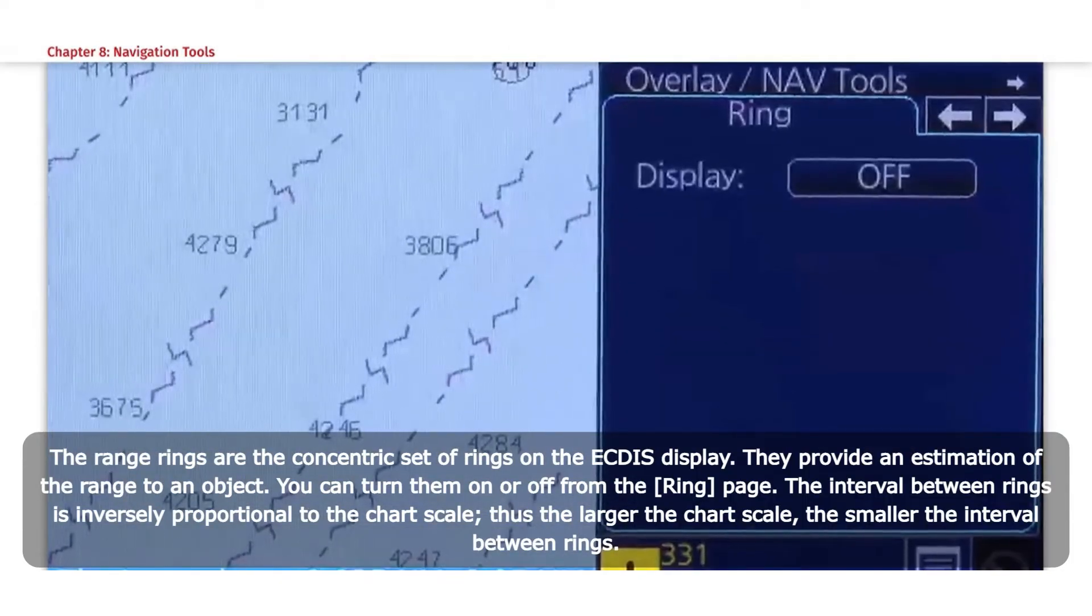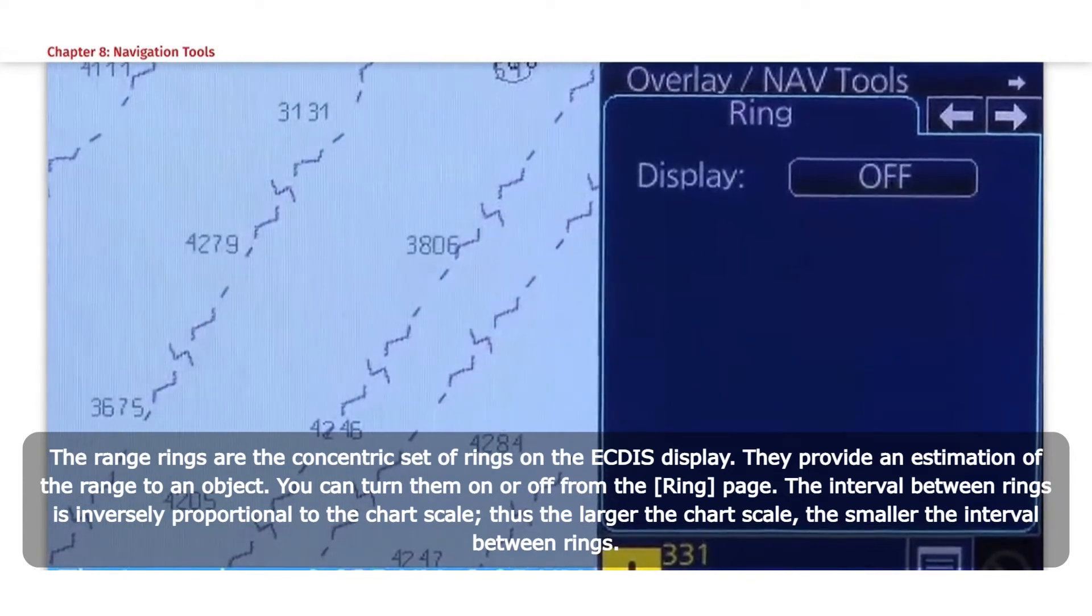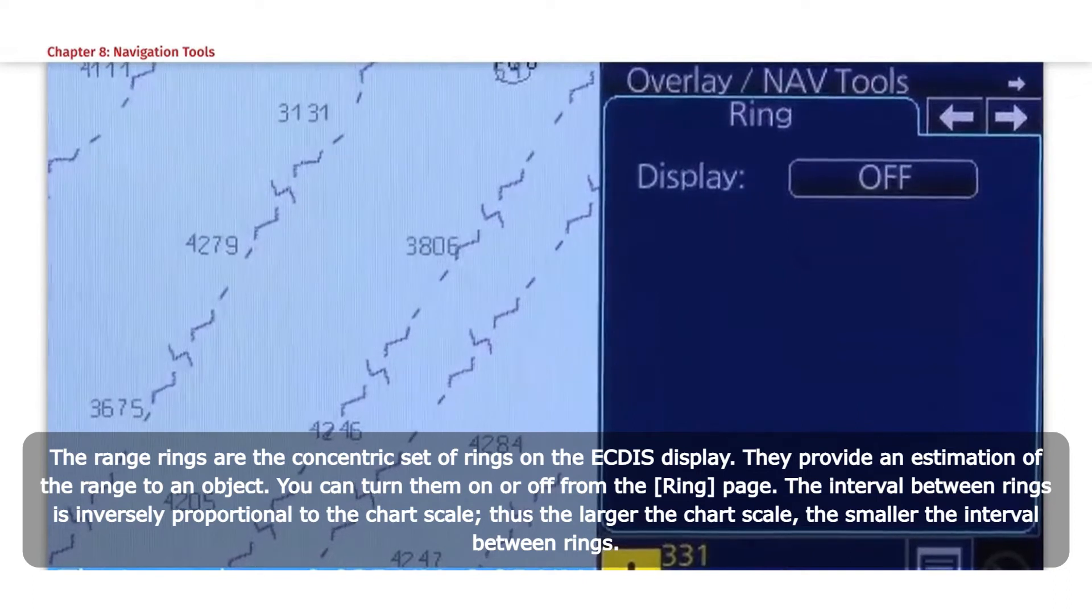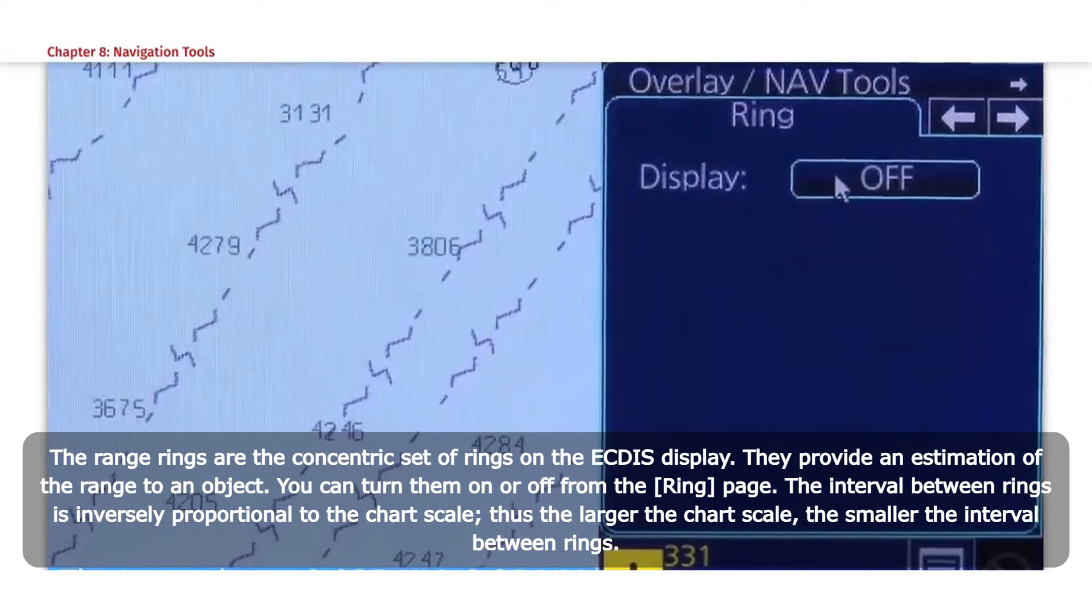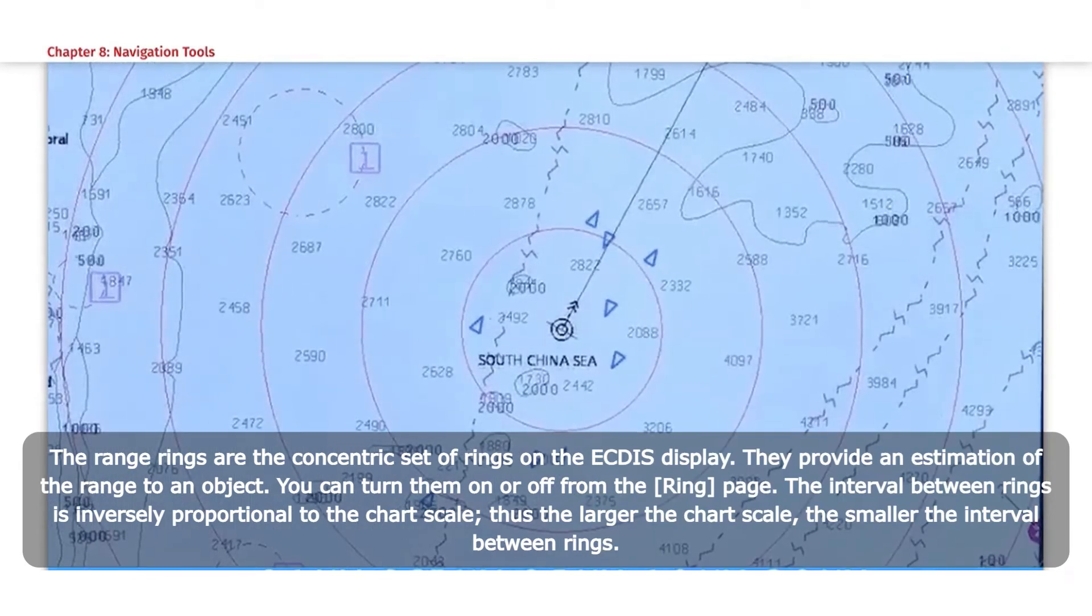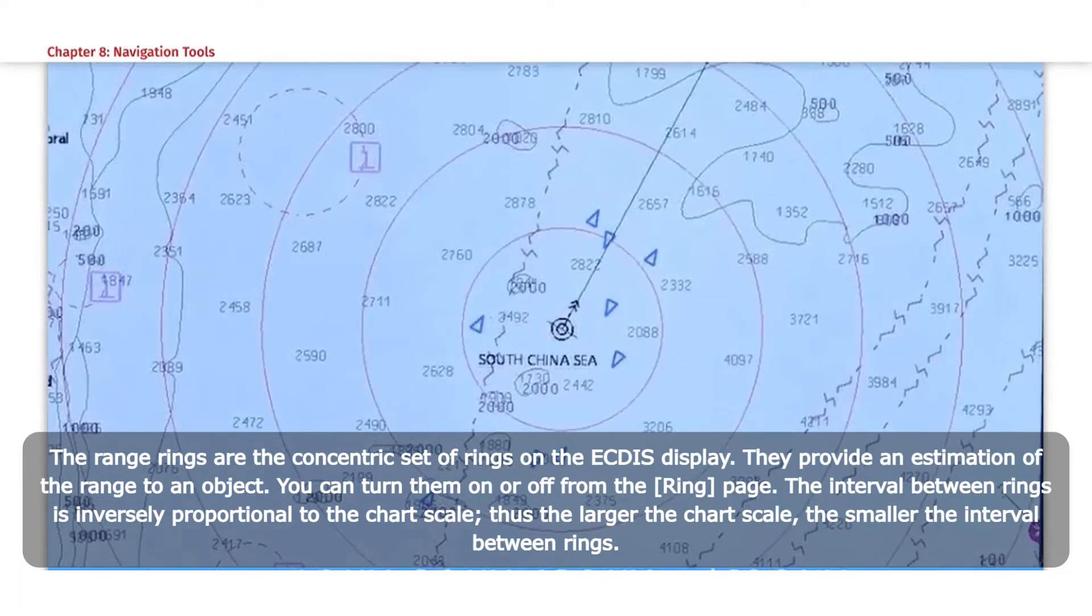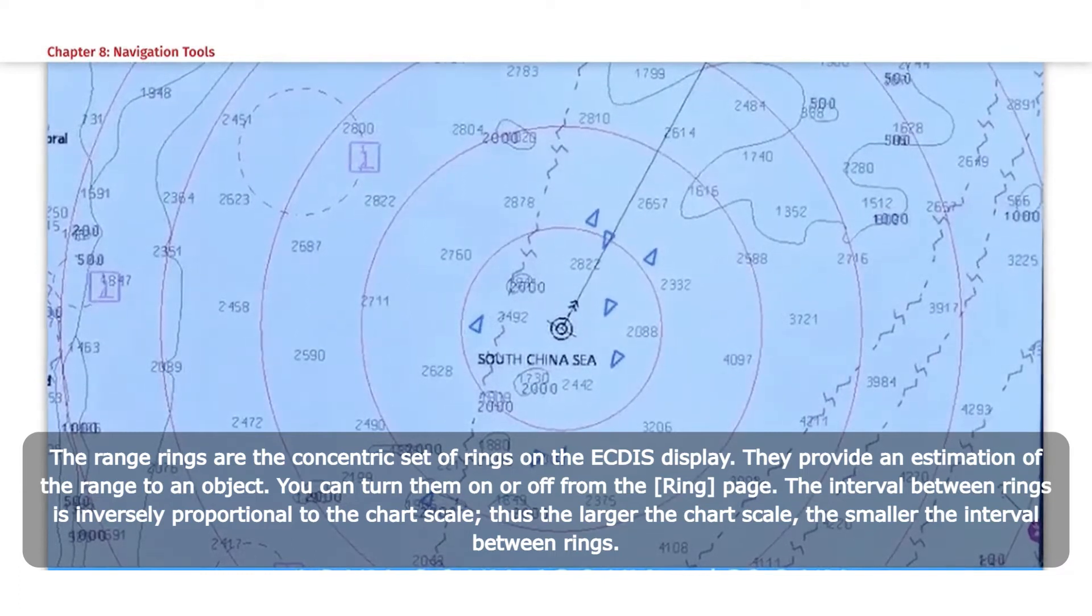The range rings are the concentric set of rings on the ECTIS display. They provide an estimation of the range to an object. You can turn them on or off from the ring page. The interval between rings is inversely proportional to the chart scale. Thus, the larger the chart scale, the smaller the interval between rings.